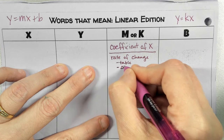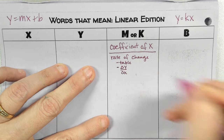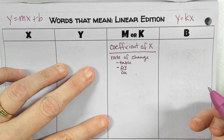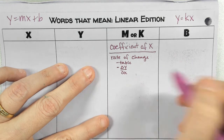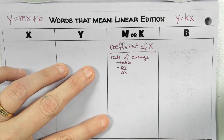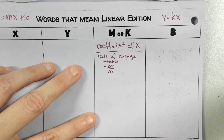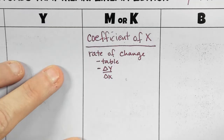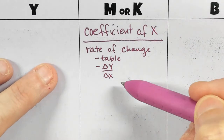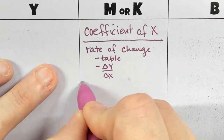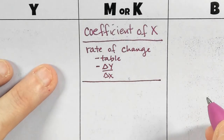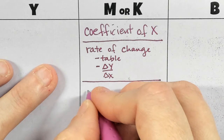Rate of change is also delta Y over delta X. That's another thing we've called it. We've also called it unit rate.